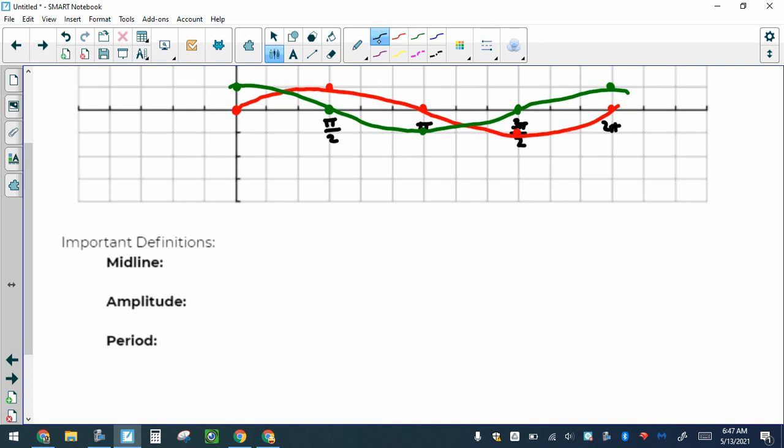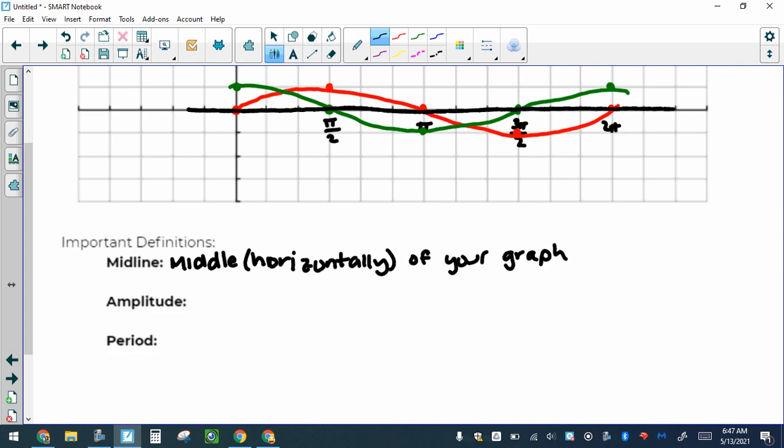Now there's a couple important definitions that we should talk about. First one is the midline—this is the middle going horizontally of your graph. For both sine and cosine, it's where this 0 line is. Sine goes above and below it. Cosine starts above, goes below, ends above. The midline is the center of your graph, where we're going above and below that line.